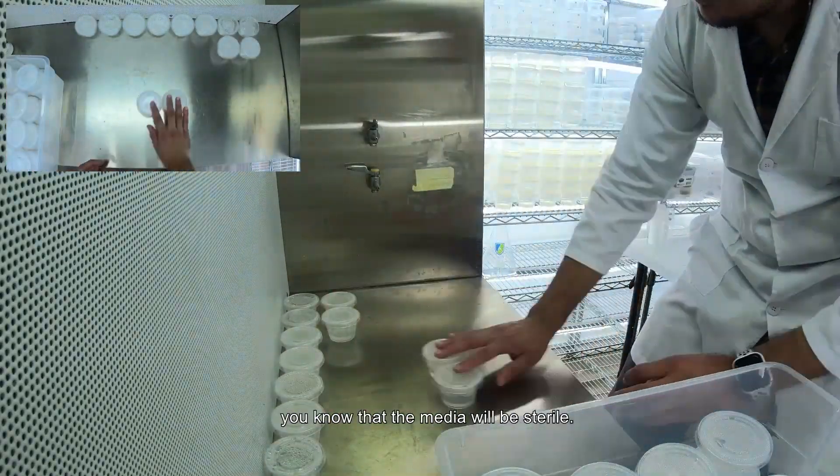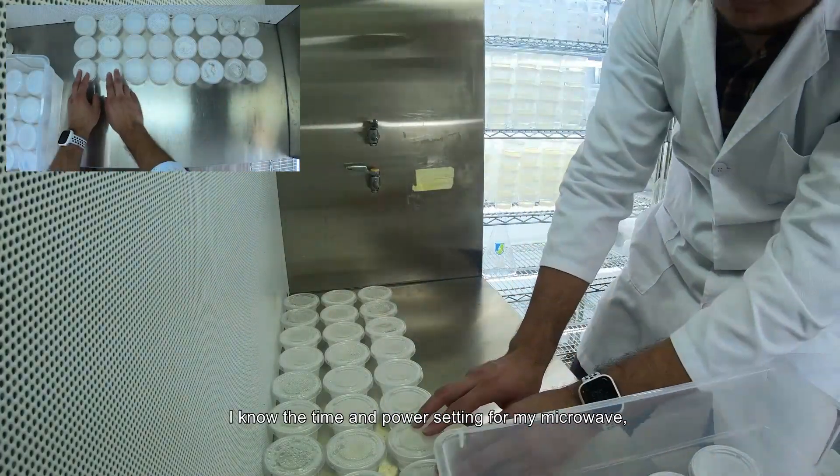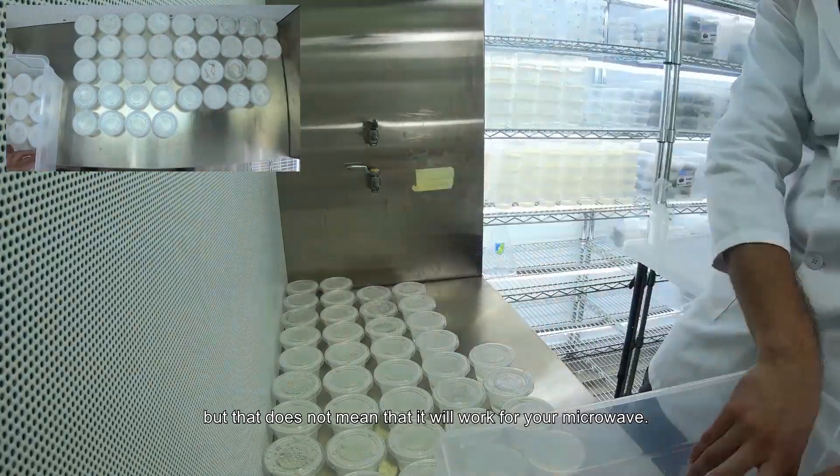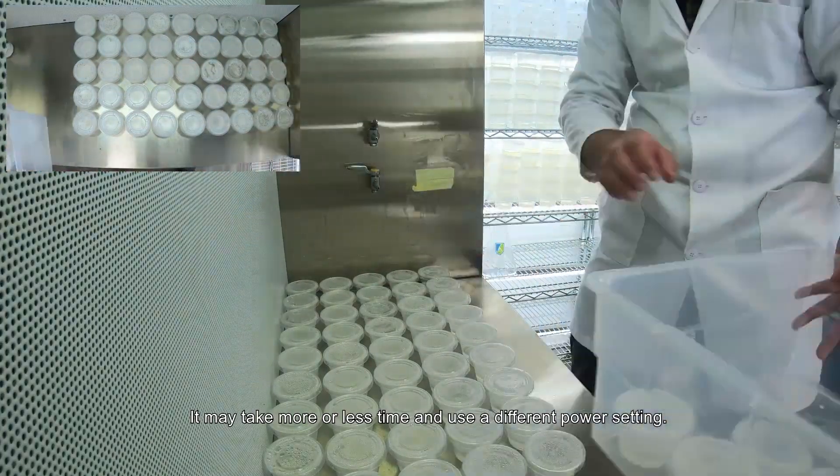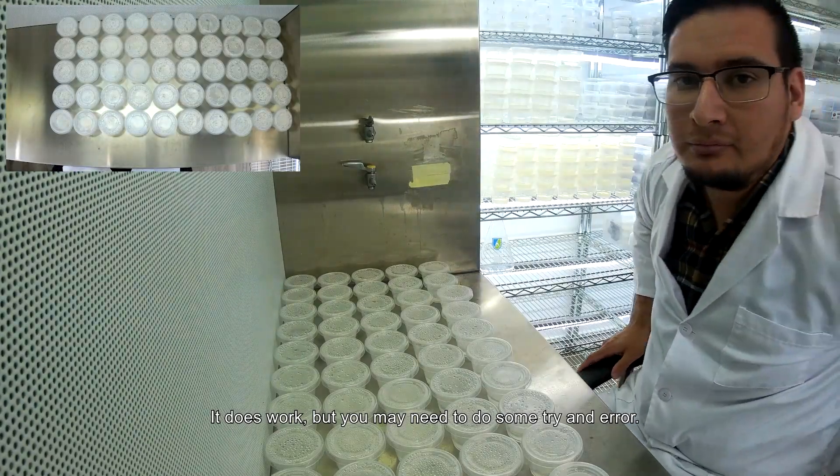I think the pressure cooker is more reliable. As long as the pressure cooker can get to 15 PSI for at least 20 minutes, you know that the media will be sterile. I know the time and power setting for my microwave, but that does not mean that will work for your microwave. It may take more or less time and use a different power setting. It does work, but you may introduce some trial and error.